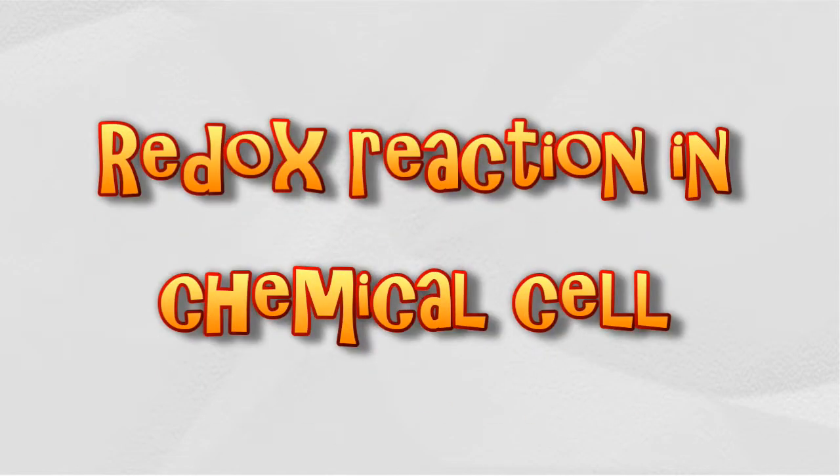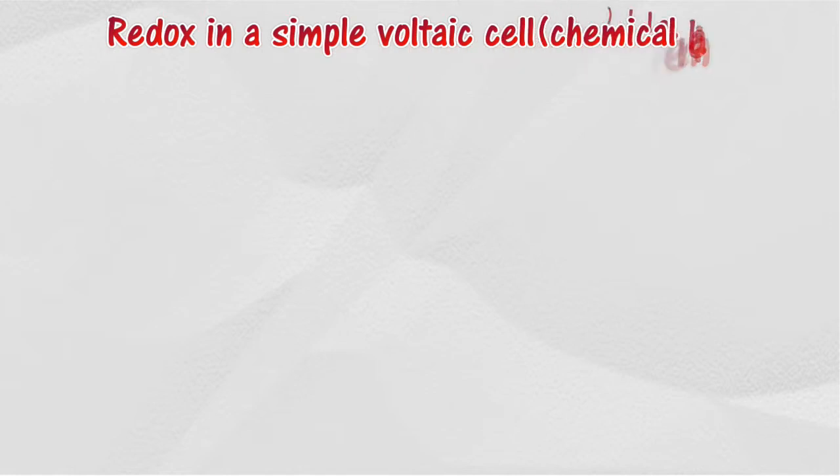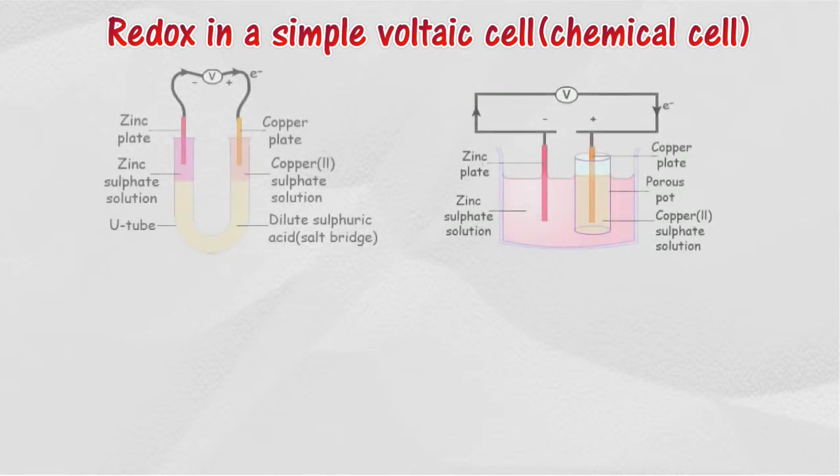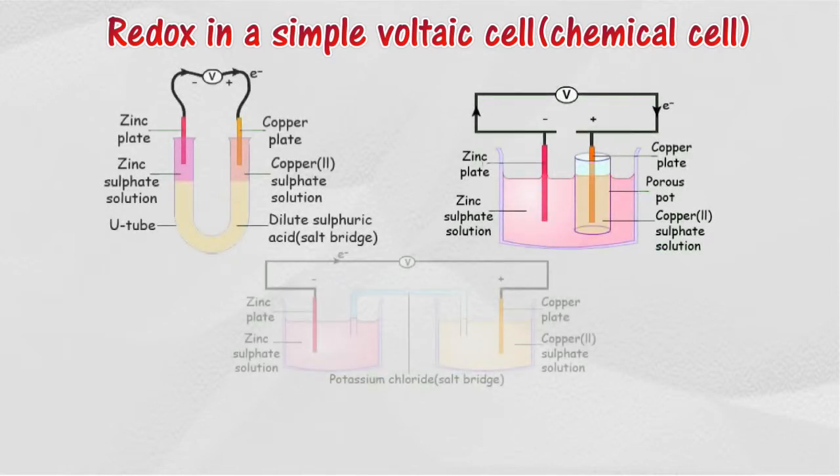Redox reaction in chemical cell. A simple voltaic cell can be constructed by immersing two metals with different electropositivities, each into its respective metal ion solution, separated by a porous pot or salt bridge. The following diagram displays three types of simple voltaic cells.